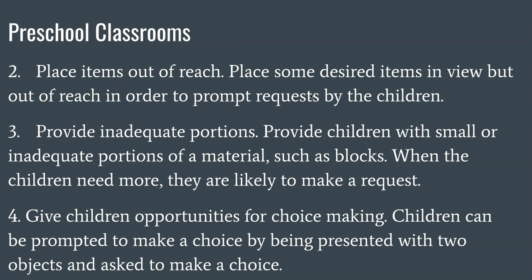Number three, kind of related to number two, providing inadequate portions. Provide children with small or inadequate portions of material, such as blocks or paper, so that they obviously need more things. Not giving them all the things, making children ask for things and have an interaction. Number four, giving children opportunities for choice making. Children can be prompted to make a choice by being presented with two objects and asked to make a choice between the two.